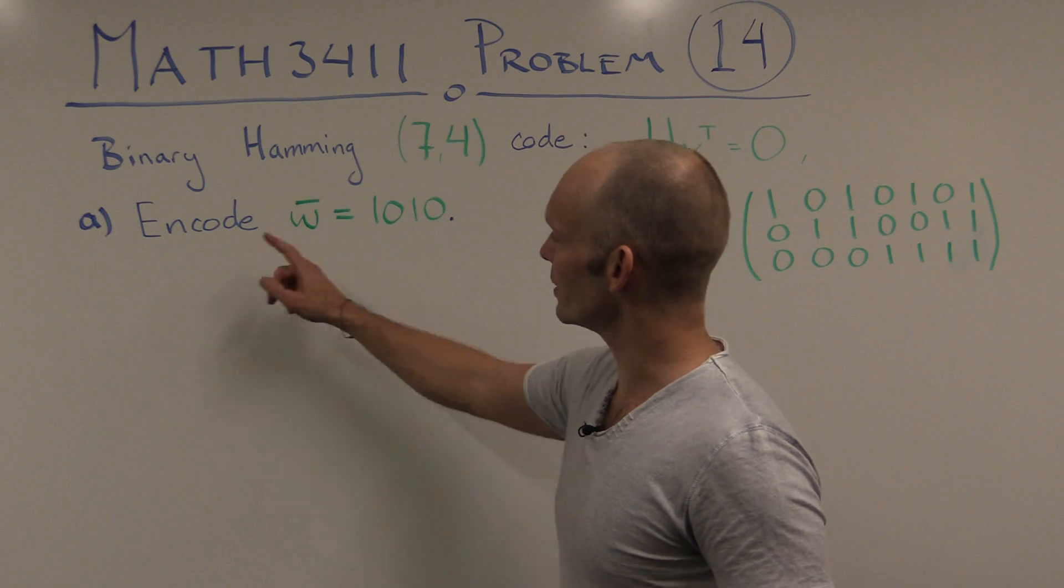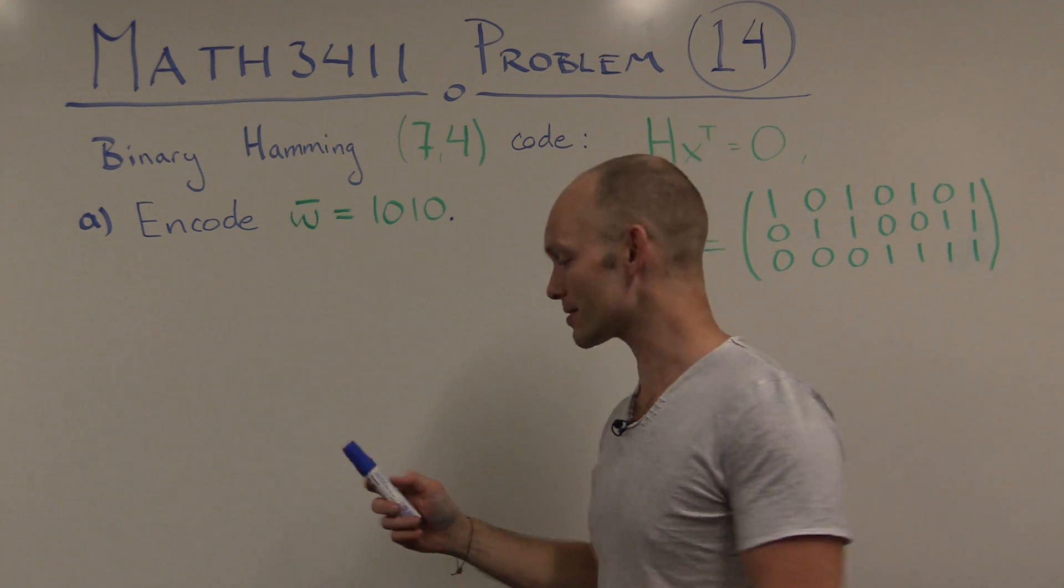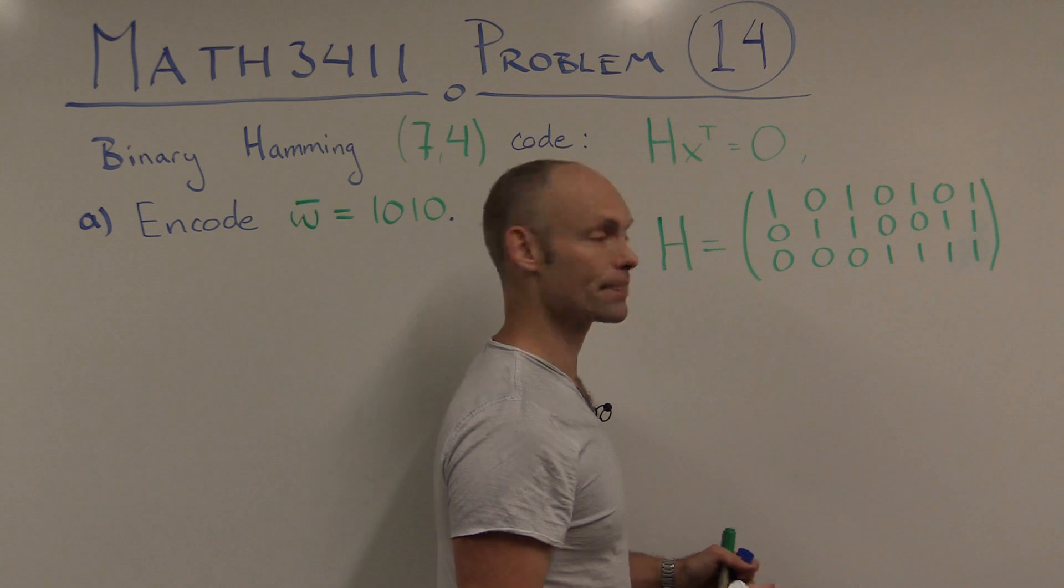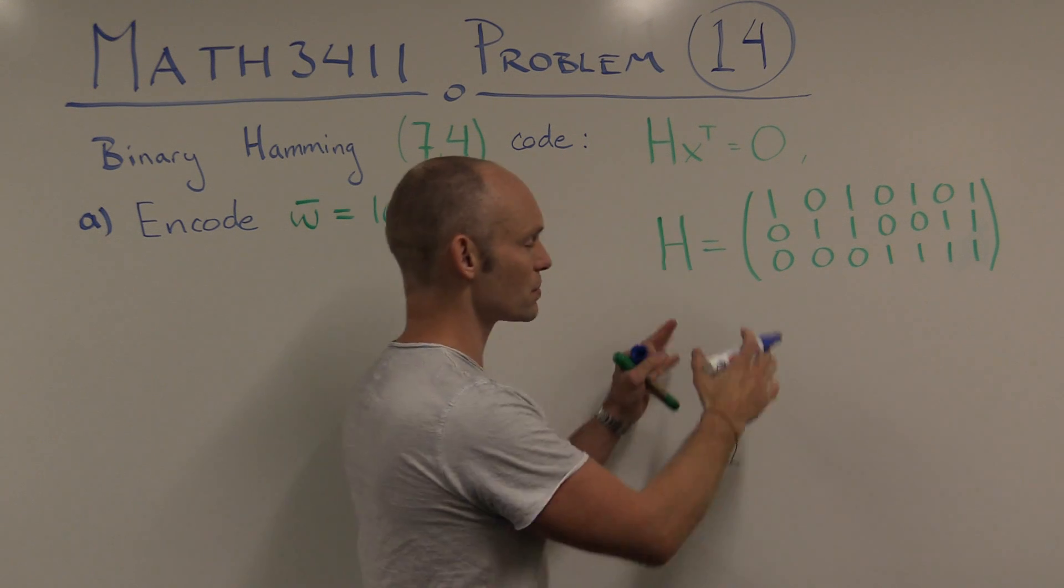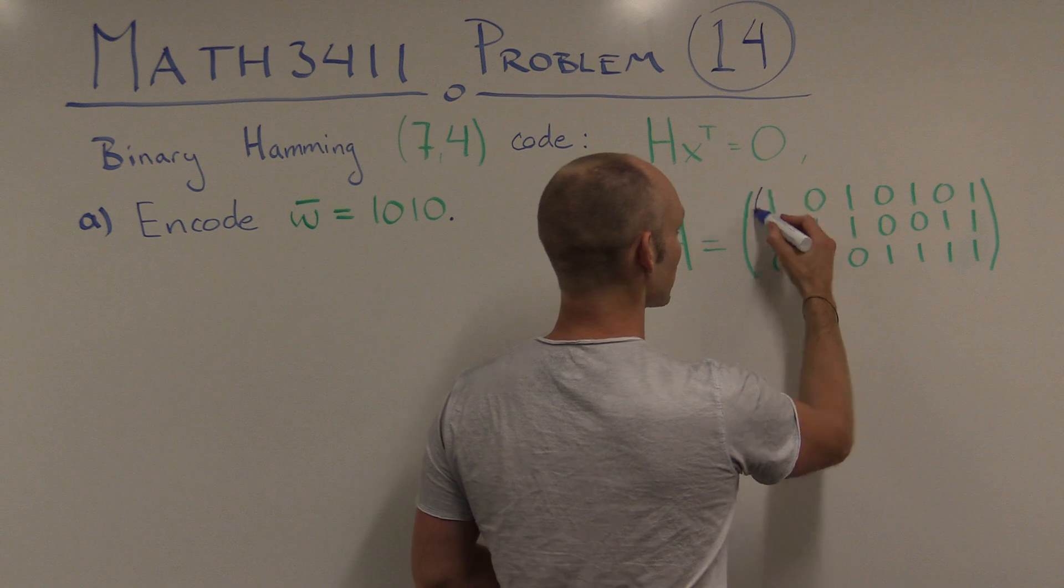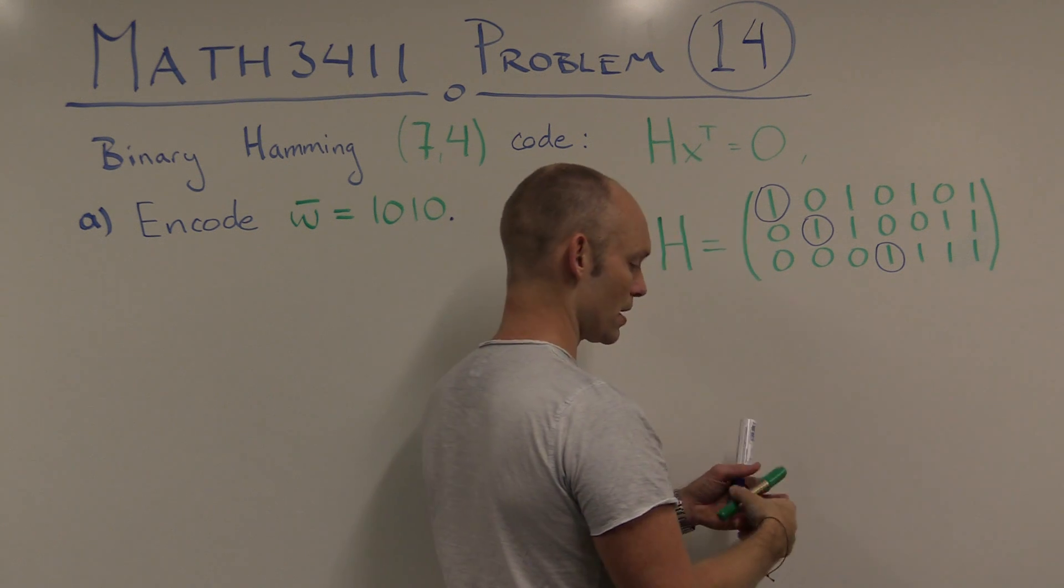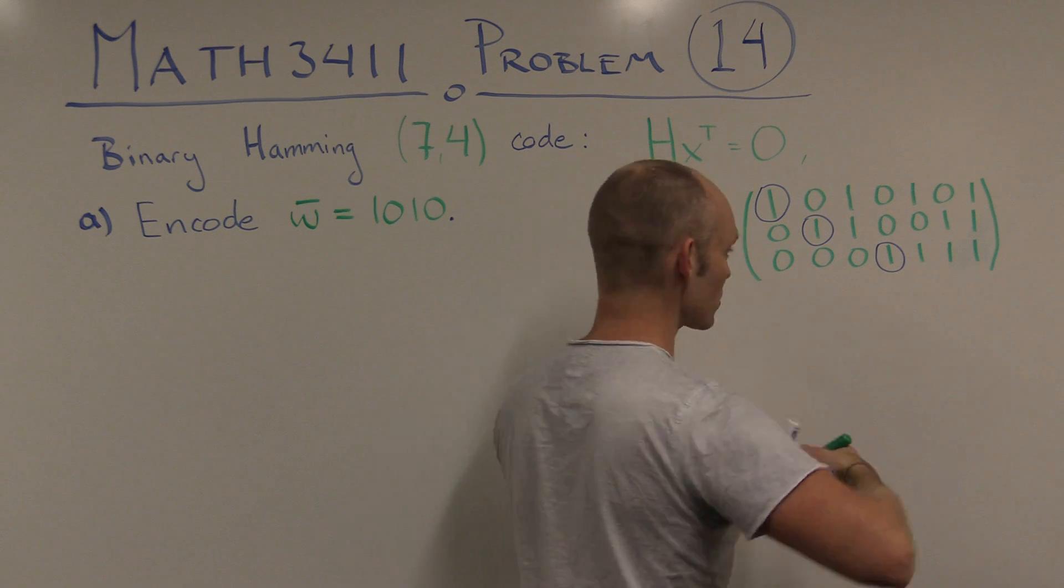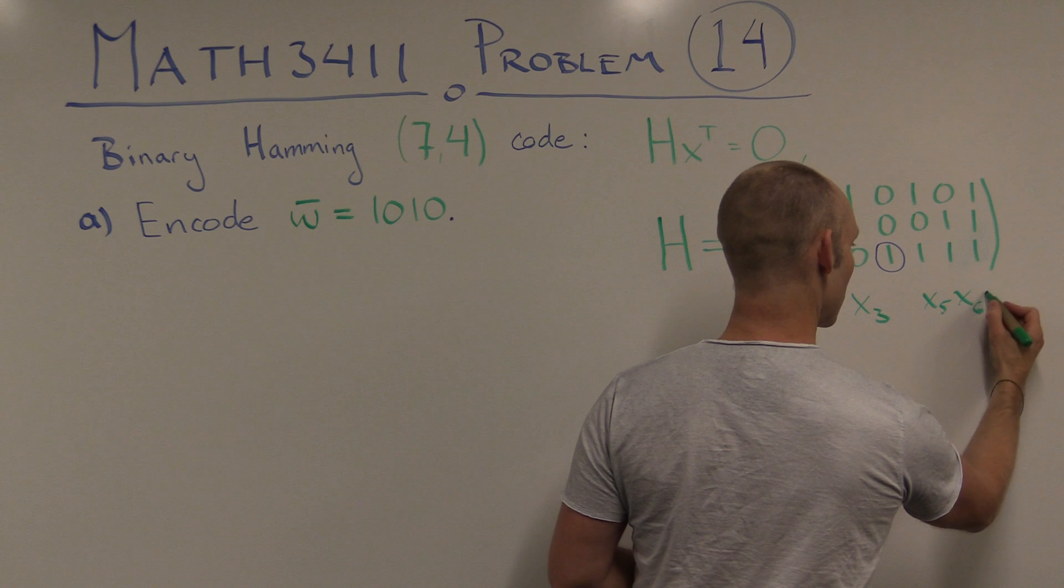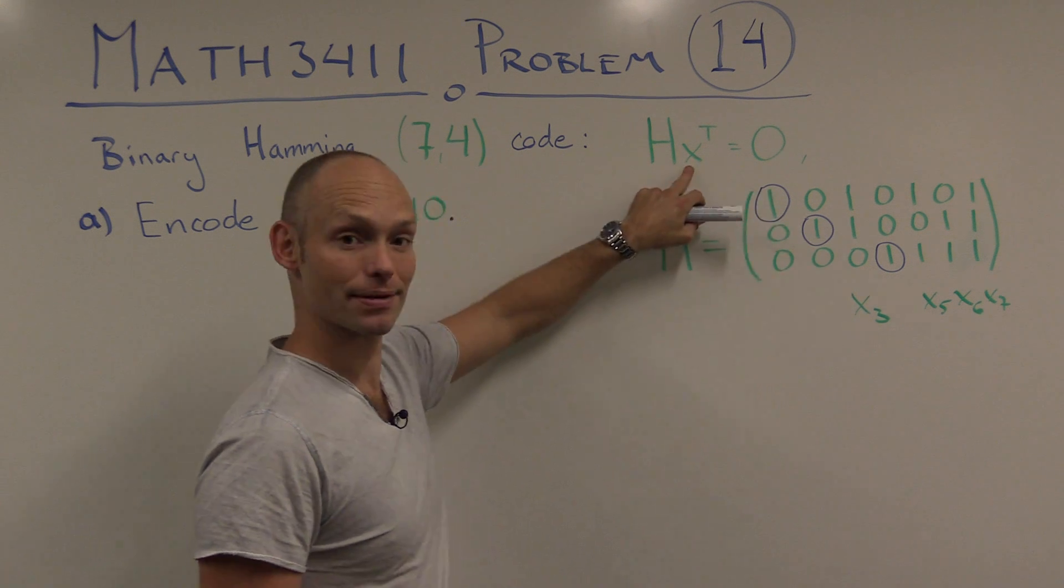For now though, we're just looking at encoding a particular message using this scheme. So what we need to do is look at the matrix here, and see which of the positions are going to be information bits, and which are going to be check bits. Now, given this way of writing it up, the standard way of determining those bits, or these positions, are to see we've got a leading entry there, there, and there, in positions 1, 2, and 4. And then the other positions, they are the non-leading entries, the non-leading positions, corresponding to parametric variables x3, x5, x6, and x7. Those are the coordinates, those particular coordinates of a codeword there.